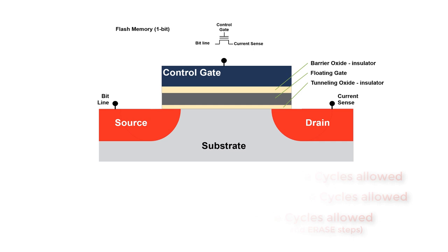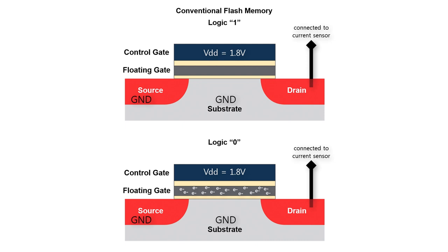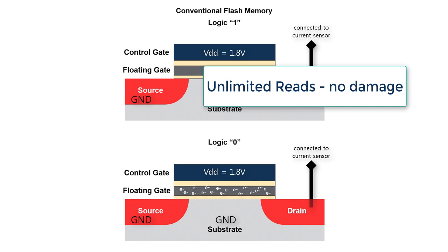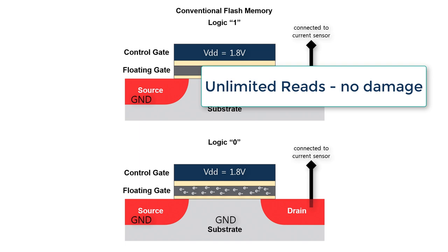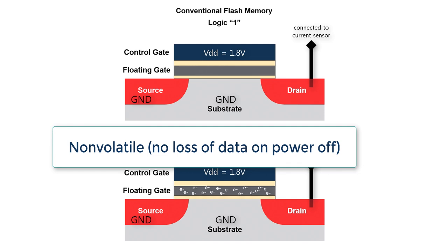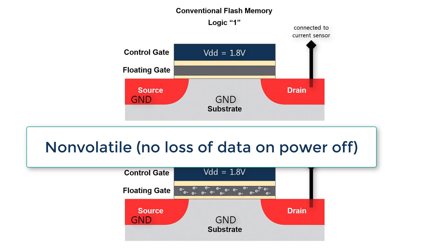Once our memory is erased and reprogrammed with new content, we can run the memory back down at 1.8 volts to read the results. Notice the change in voltages — these lower voltages cause no stress on the oxides, so you can read your memory as many times as you want without damaging the cells. And once programmed, the memory can be turned off, unplugged, or have its battery removed — the content is not lost. You can come back in 20 years, turn the power on again, and all your ones and zeros will still be there.